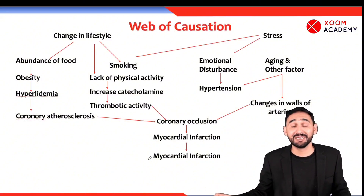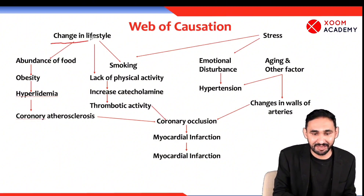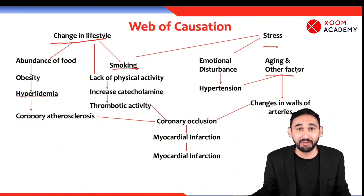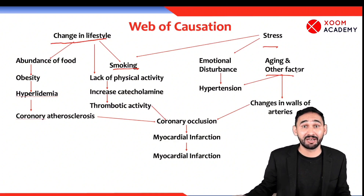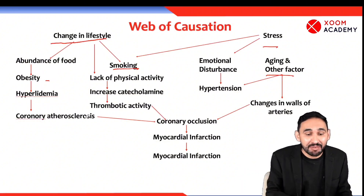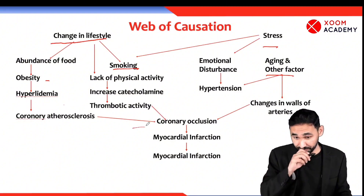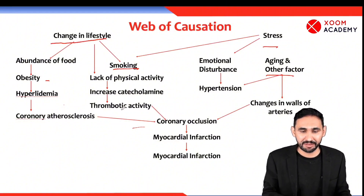Like in ischemic heart disease: lifestyle changes can cause the disease, smoking can cause the disease, stress can cause the disease, and aging can cause the disease. So there are four major risk factors: changing lifestyle, smoking, stress, and aging. Lifestyle changes — someone is taking fast food, unhealthy diet, not taking balanced diet — they will become obese, weight will increase, which can cause hyperlipidemia, which causes atherosclerosis, which causes coronary occlusion. People who smoke have increased thrombotic activity.